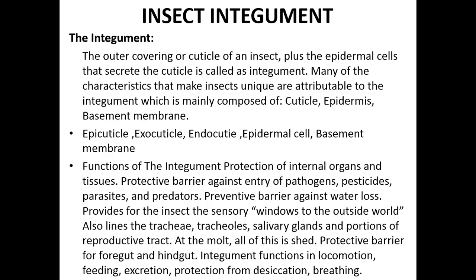Integument protects the internal organs and tissues. It acts as a protective barrier against water loss. It provides the insect a sensory window to the outside. It also lines the trachea, tracheoles, salivary glands, and portions of the reproductive tract.